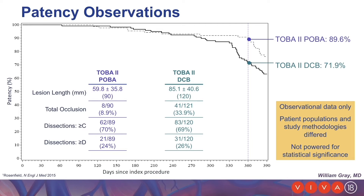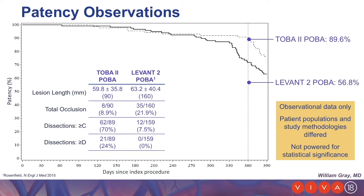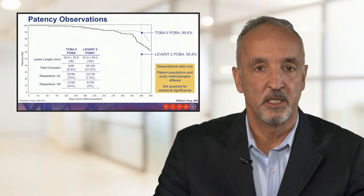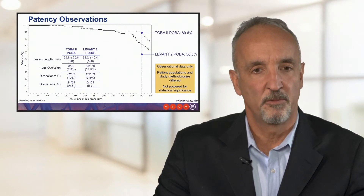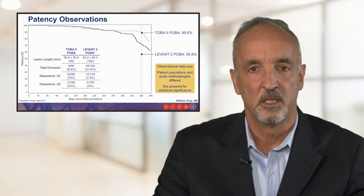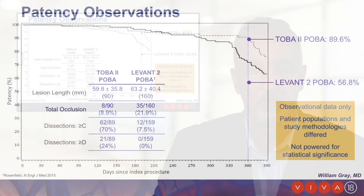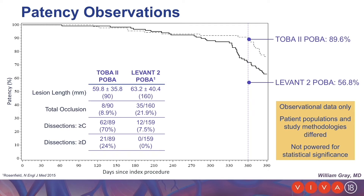Comparing the Levant II POBA arm to the TOBA II POBA group, lesion lengths were roughly similar, but total occlusions were more common in the Levant II POBA arm. Dissections, however, predominated in the TOBA II POBA group. From a complexity standpoint they're roughly similar, trading occlusions for dissections. As a historical reference, the Levant II POBA arm is in line with most other POBA arms in DCB trials at roughly 56% patency. Comparatively, the TOBA II POBA arm had nearly 90% patency — more than 30% greater than historical POBA patency.